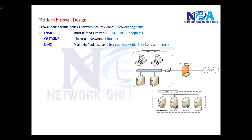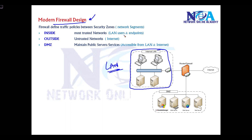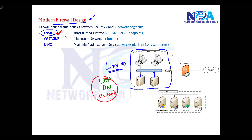Most basic firewall designs include three components — three different network segments. The first is the internal LAN, where all end users and endpoints are connected and accessing services from servers. The second is the inside network, also called LAN, trusted network, or simply 'inside' — the most common name used. The outside network typically refers to the internet, which is the untrusted network.